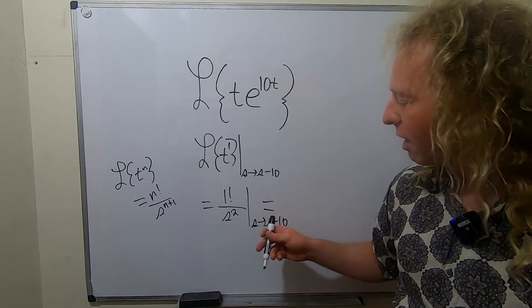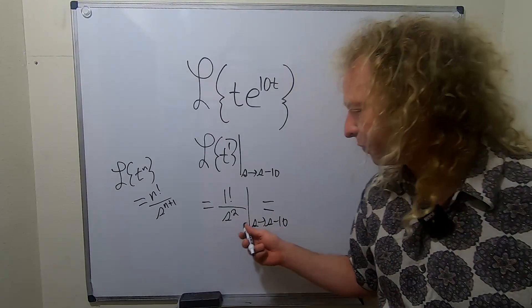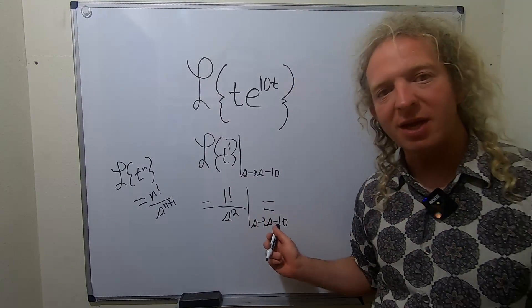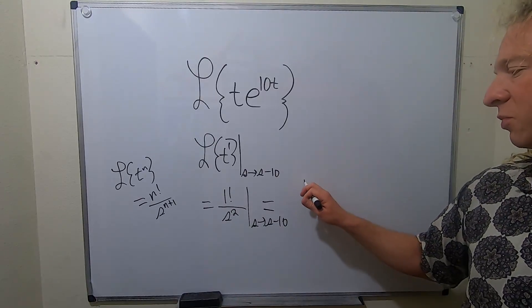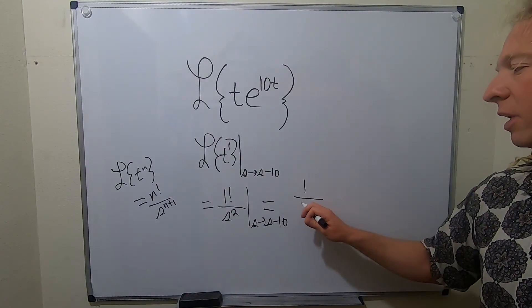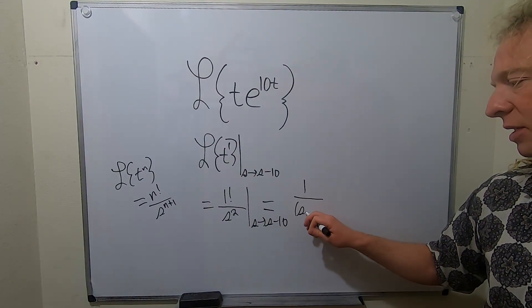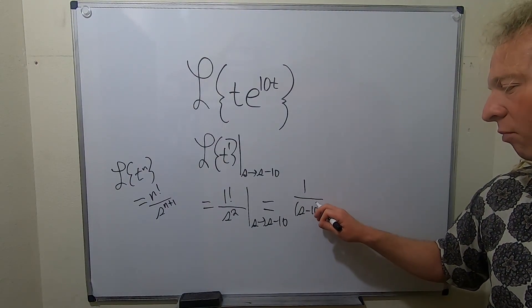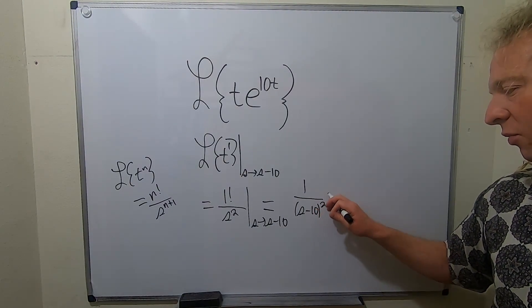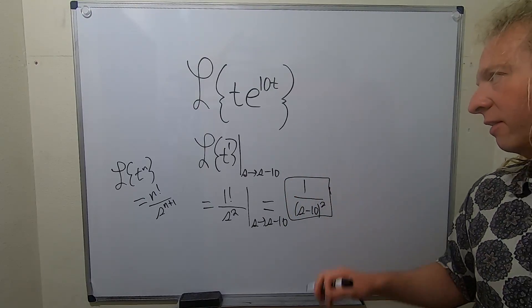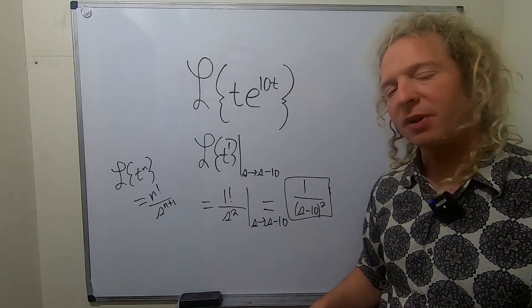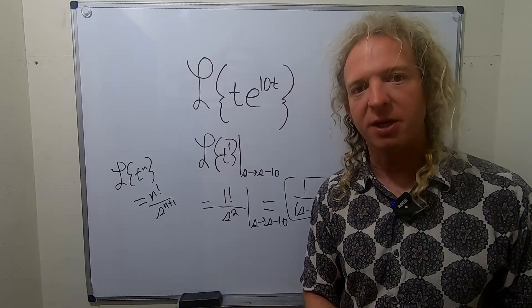Now all we have to do is substitute s minus 10 in for s. So this is 1 over (s minus 10) squared, and that should be the final answer. I hope this video has been helpful.